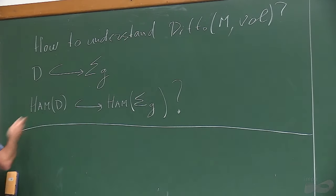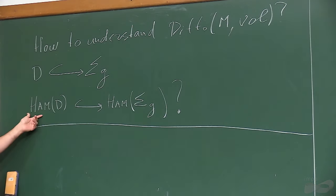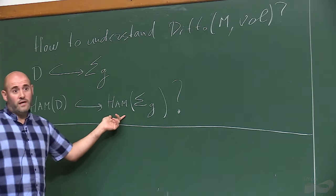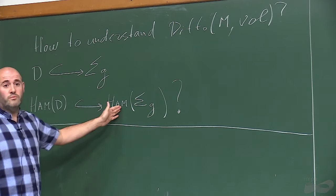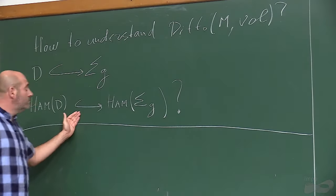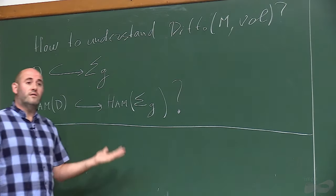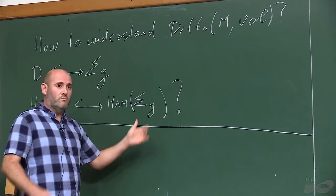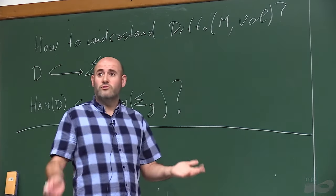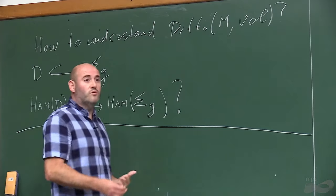For example, suppose you have a disk in dimension two, and the disk embeds inside some surface Σ_g of genus g. You can look at Ham of the disk embedding inside Ham of Σ_g. Put your favorite metric on each — Hofer metric, entropy metric, or LP metric — and ask: is this embedding quasi-isometric? With Hofer metric this seems extremely difficult, since we don't even know whether we can embed a free group quasi-isometrically. For LP metrics in higher dimensions, the diameter of Diff₀ of a three-dimensional disk is finite, but it can embed in a three-manifold with infinite LP diameter, so the embedding need not be quasi-isometric.